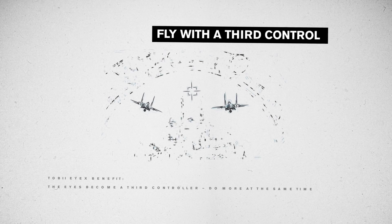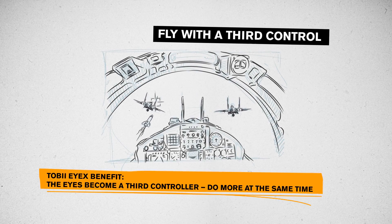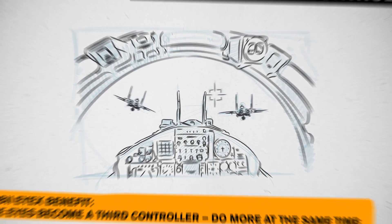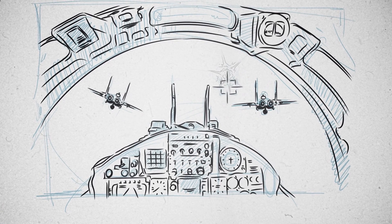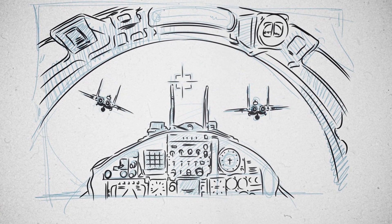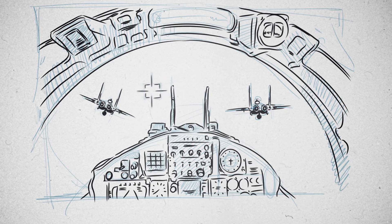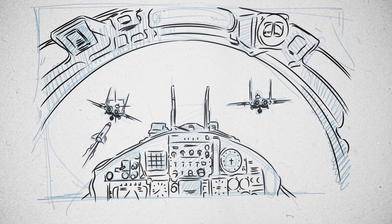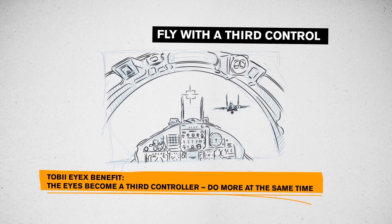Fly with a Third Control: In flight combat games, eye tracking allows you to lock on targets that you look at, then shoot with the regular shortcut key. Having the gaze as an additional control input increases the gamer's bandwidth in many shooting games.